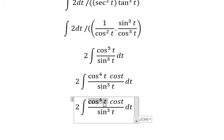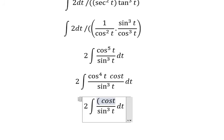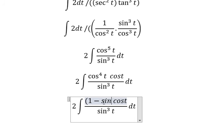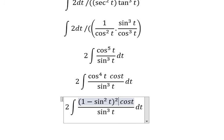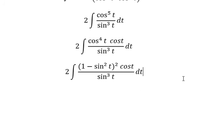Cosine t to the power of four can be written as one minus sine t squared, to the power of two. Next we need to use integration by substitution again.